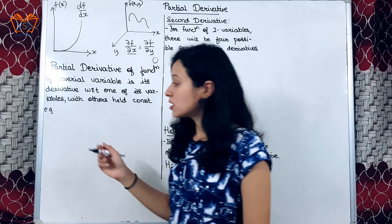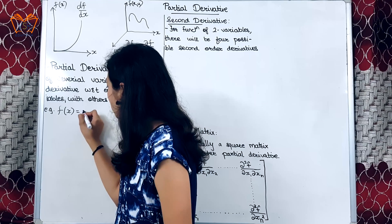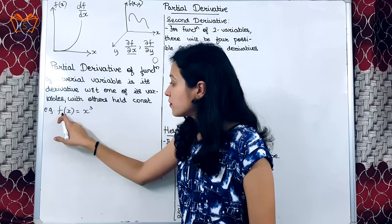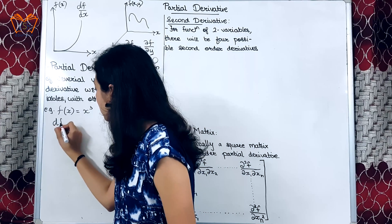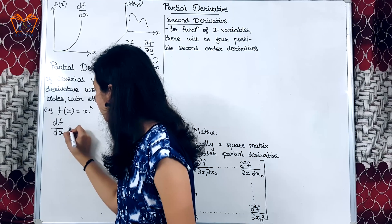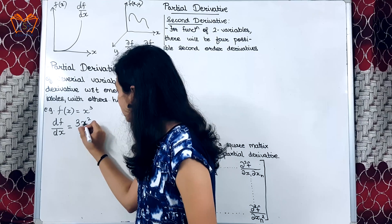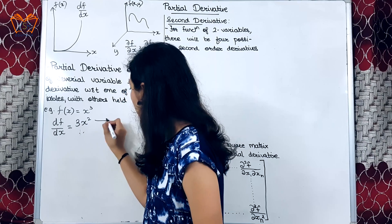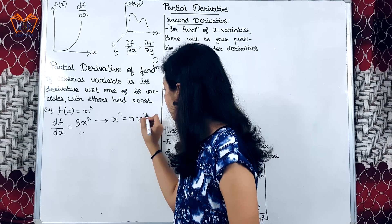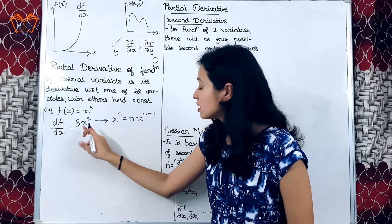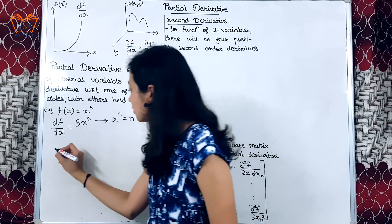If the concept is still not clear, let us go for the first example: f of x is equal to x cubed. The function is dependent upon only one variable, so my simple derivative will be 3x squared. This arises from the formula: the derivative of x raised to n is n times x raised to n minus 1. This applies for the single variable.